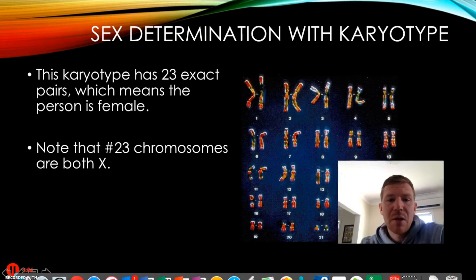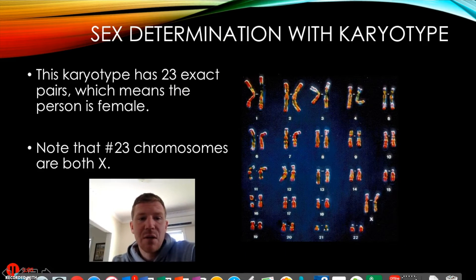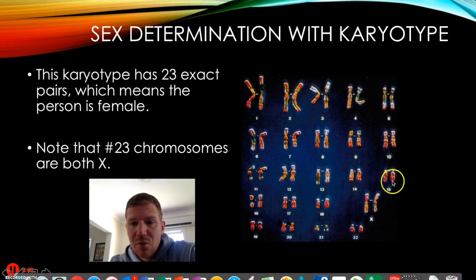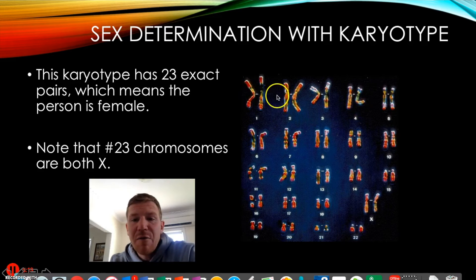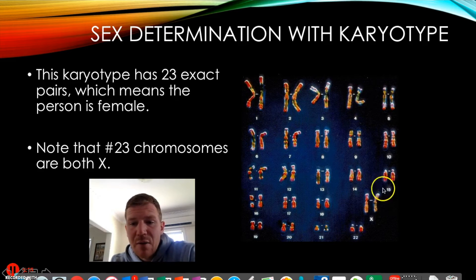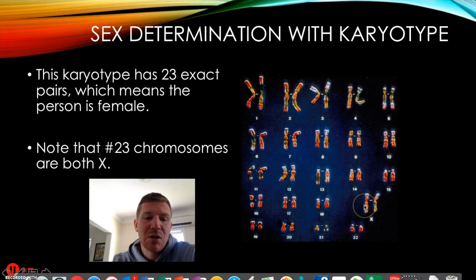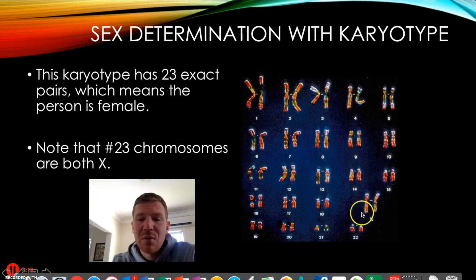This karyotype has 23 exact pairs, which means it is female. If you sort them all and there are 23 exactly matching pairs, you know it's a female because the two X's match. We can see that here.